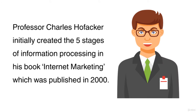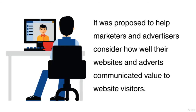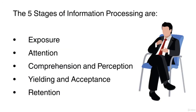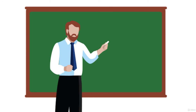Professor Charles Hothaker initially created the five stages of information processing in his book Internet Marketing, which was published in the year 2000. It was proposed to help marketeers and advertisers consider how well their websites and adverts communicated value to website visitors. The five stages of information processing are exposure, attention, comprehension and perception, yielding and acceptance, and retention.